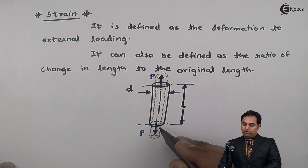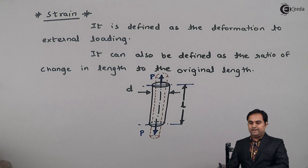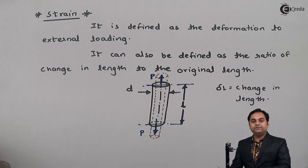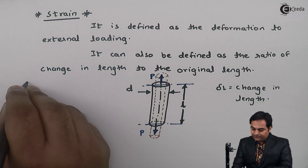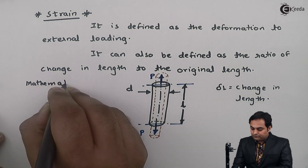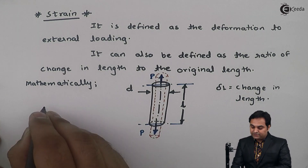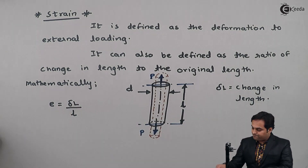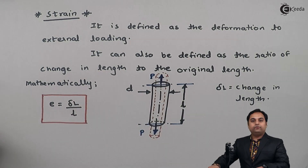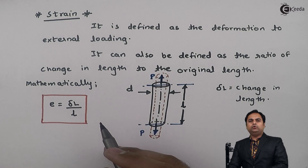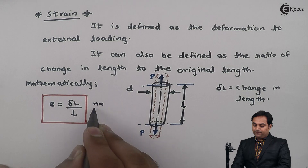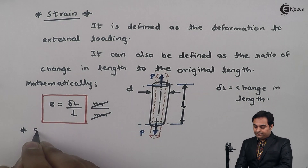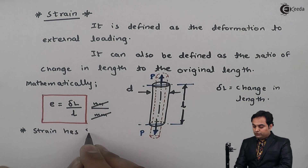Strain can also be defined as the ratio of change in length to original length. The change in length of this rod is denoted by Delta L. Mathematically, strain is equal to change in length upon original length. The unit of strain: change in length is in mm, original length is also in mm — mm gets cancelled out, which means strain has no units.